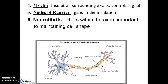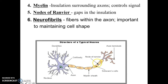Around the axon you have these insulated structures called myelin. What it does is it controls the signal and makes it go faster — it insulates it so that the signal can move even quicker. You have the nodes of Ranvier, which are the spaces in between each myelin sheath.